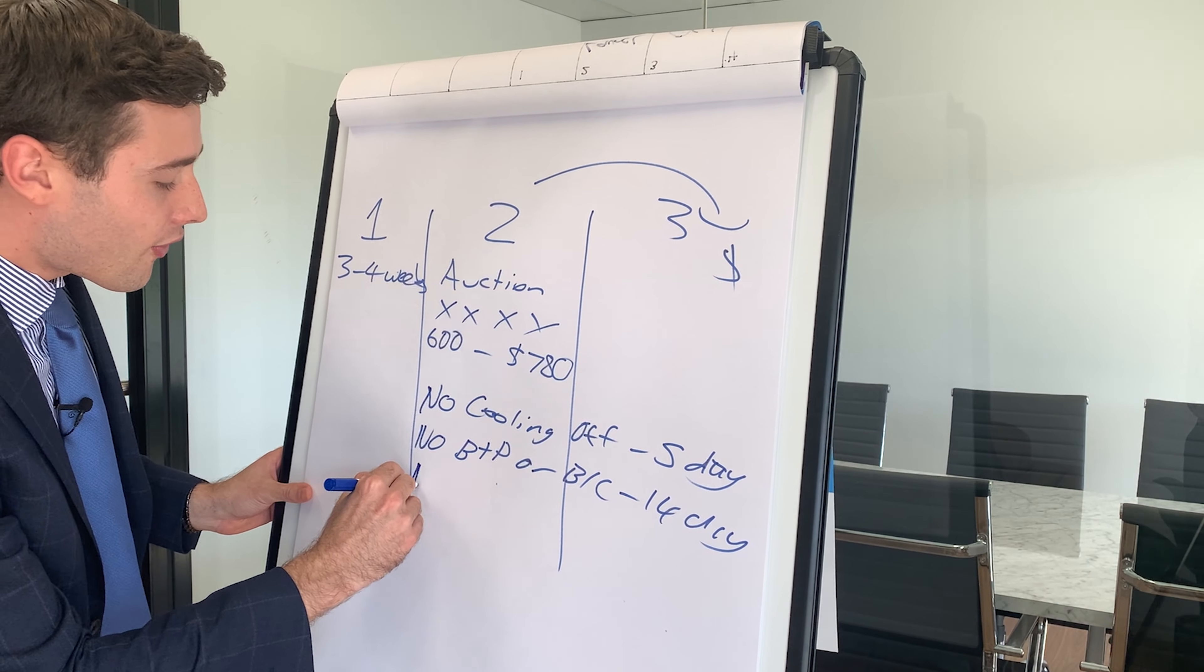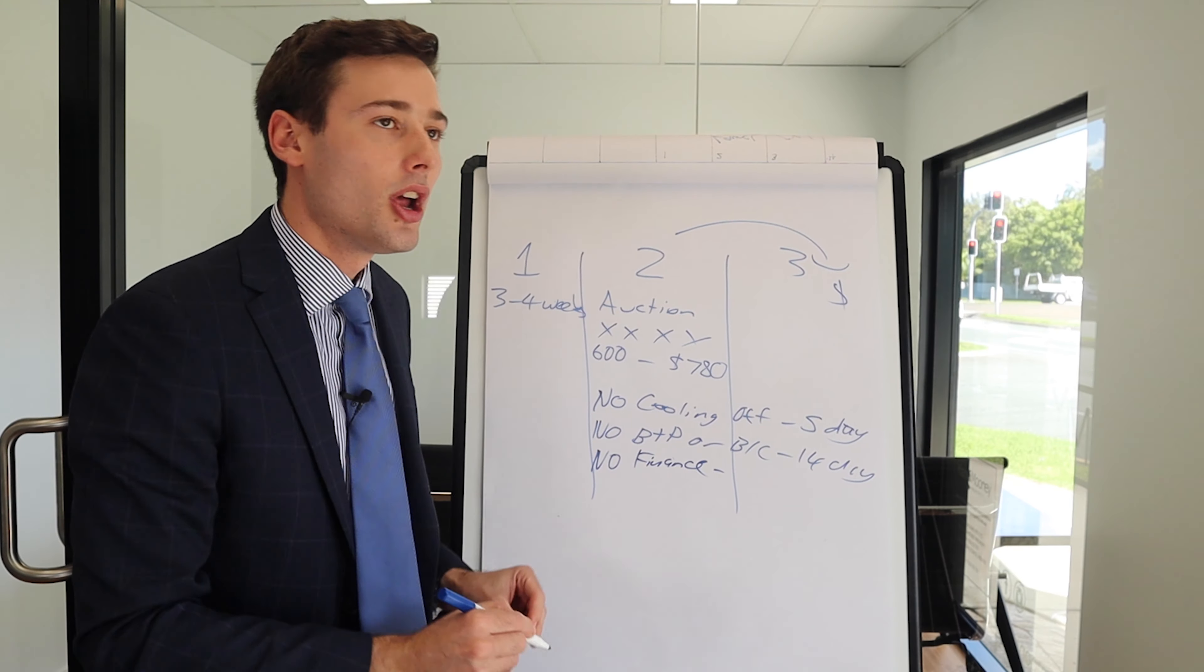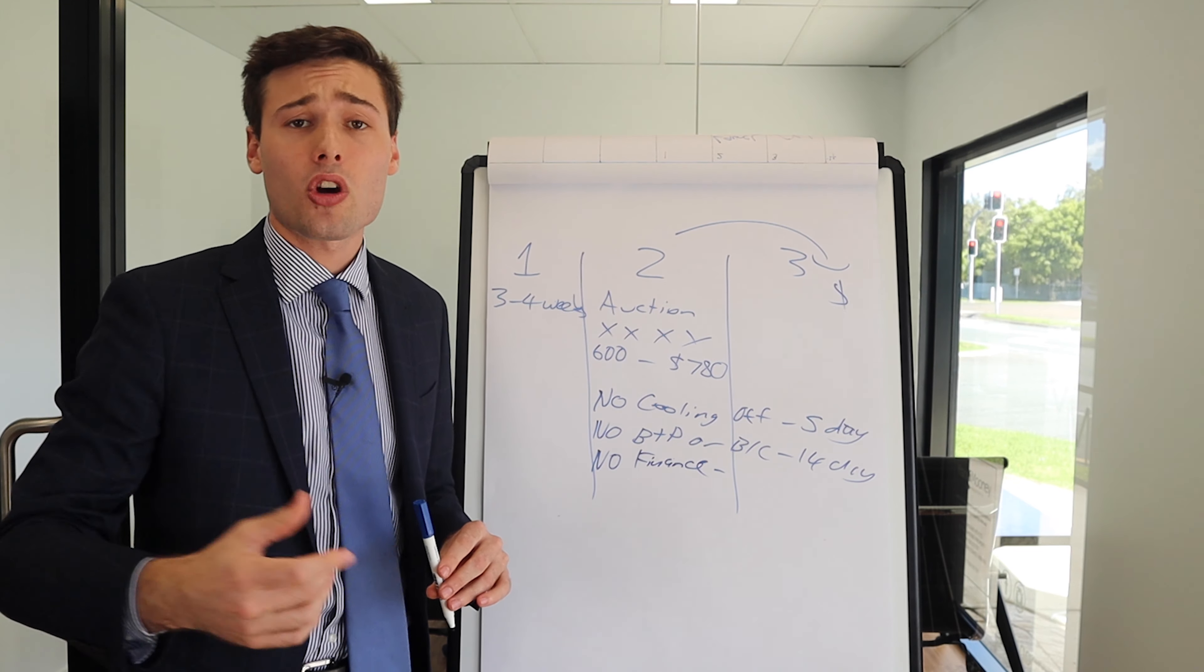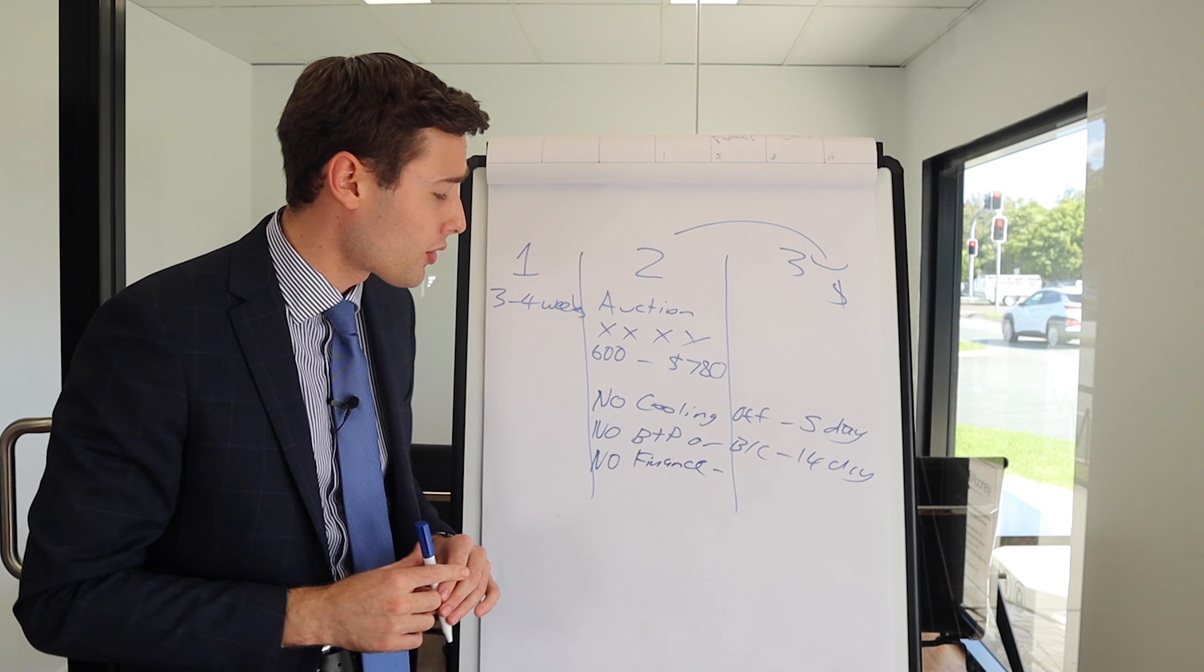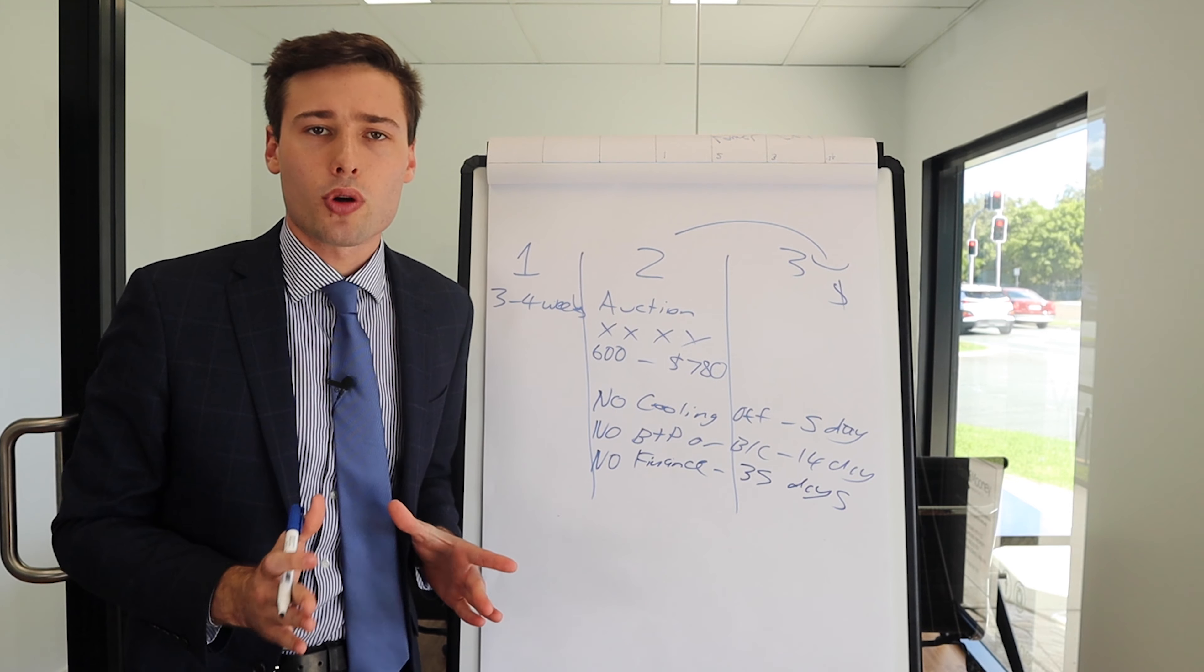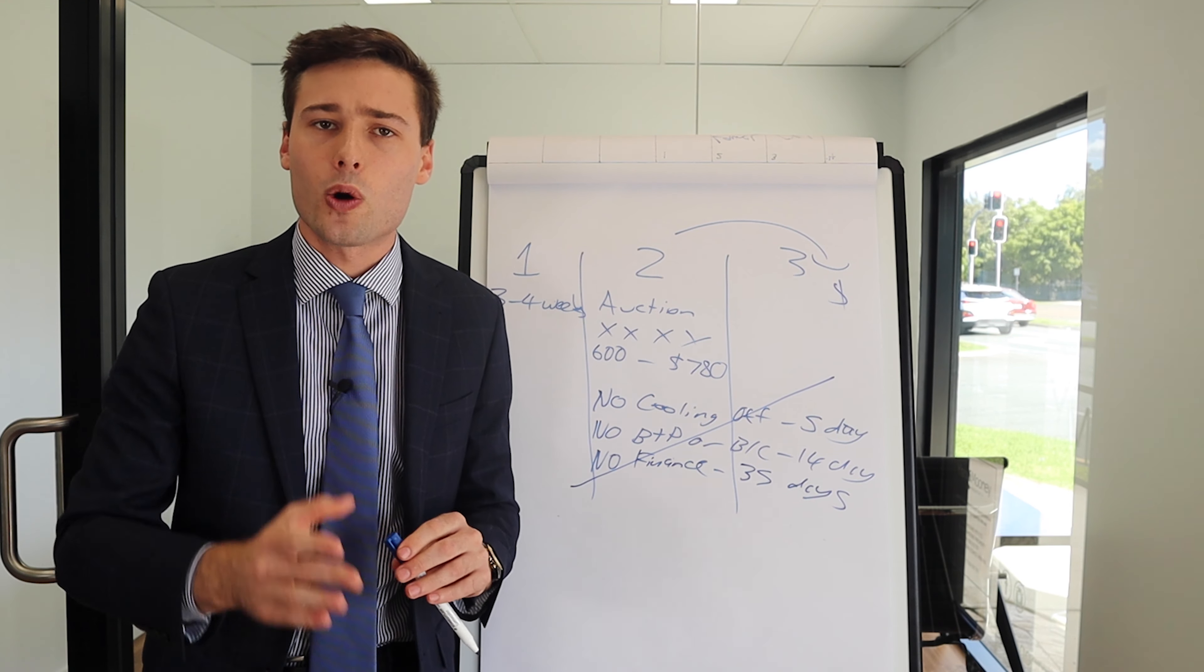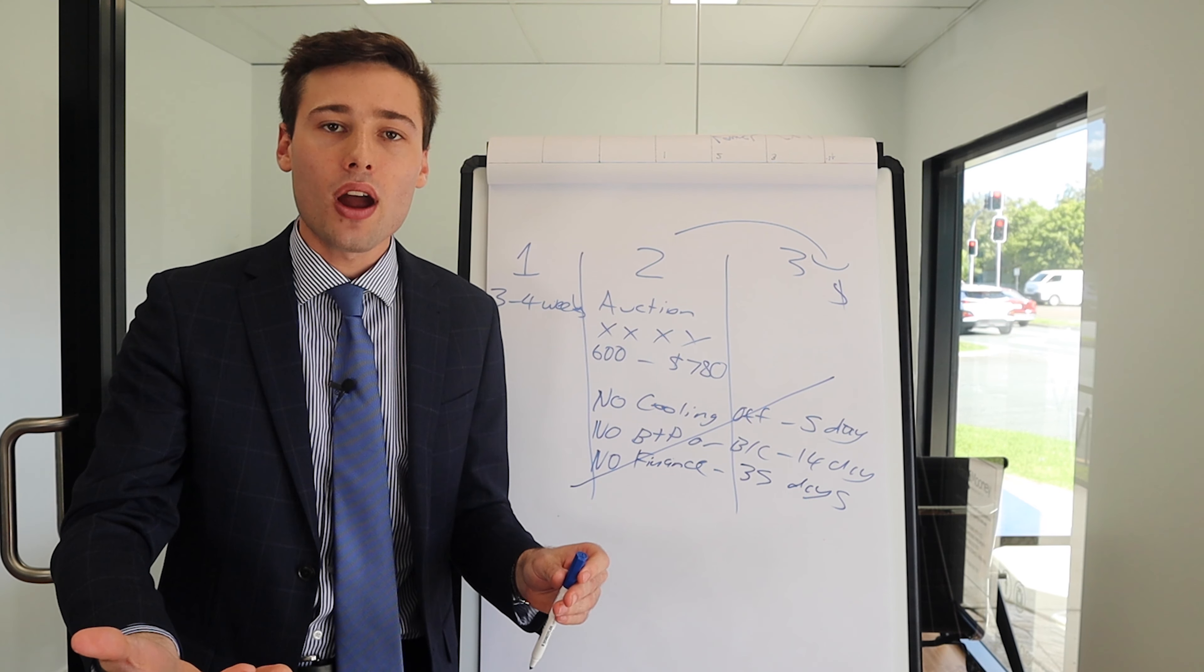And there's no finance. So finance is cheap at the moment, but banks are backlogged. Generally we're looking at 28 to even 35, 42 days. I had one the other day, 42 days to wait for the finance to come through. So 35 days on average there, the benefit of the auction process is there's no conditions on the contract of sale. The minute the hammer falls, it's done, it's dusted. You move on with life.